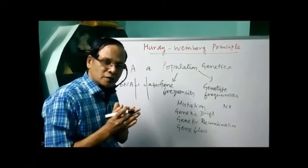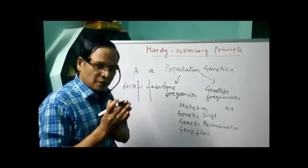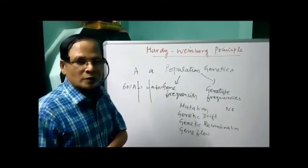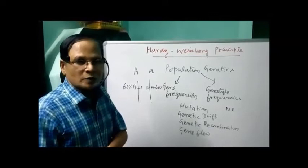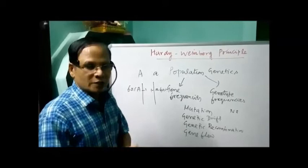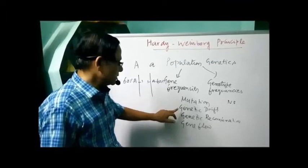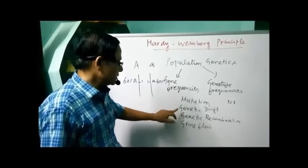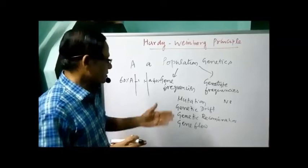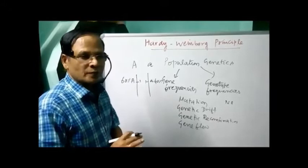The relative frequencies of various genes in a large, randomly mating population remains constant, generation after generation, in the absence of certain factors — namely mutation, genetic drift, genetic recombination, gene flow, and natural selection. That is the definition for the Hardy-Weinberg principle. If any one of these factors is met with, the Hardy-Weinberg equilibrium is not possible.